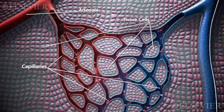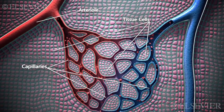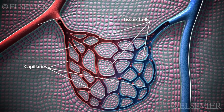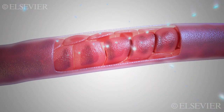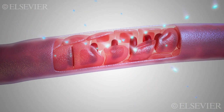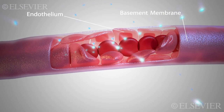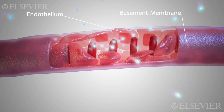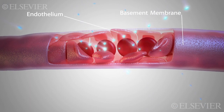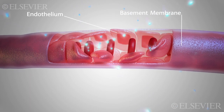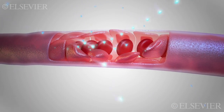Arterioles are the smallest arteries. They connect to capillaries. The wall of a capillary consists of a single layer of endothelium and basement membrane. This thin wall facilitates substance exchange between the blood and the tissue cells.